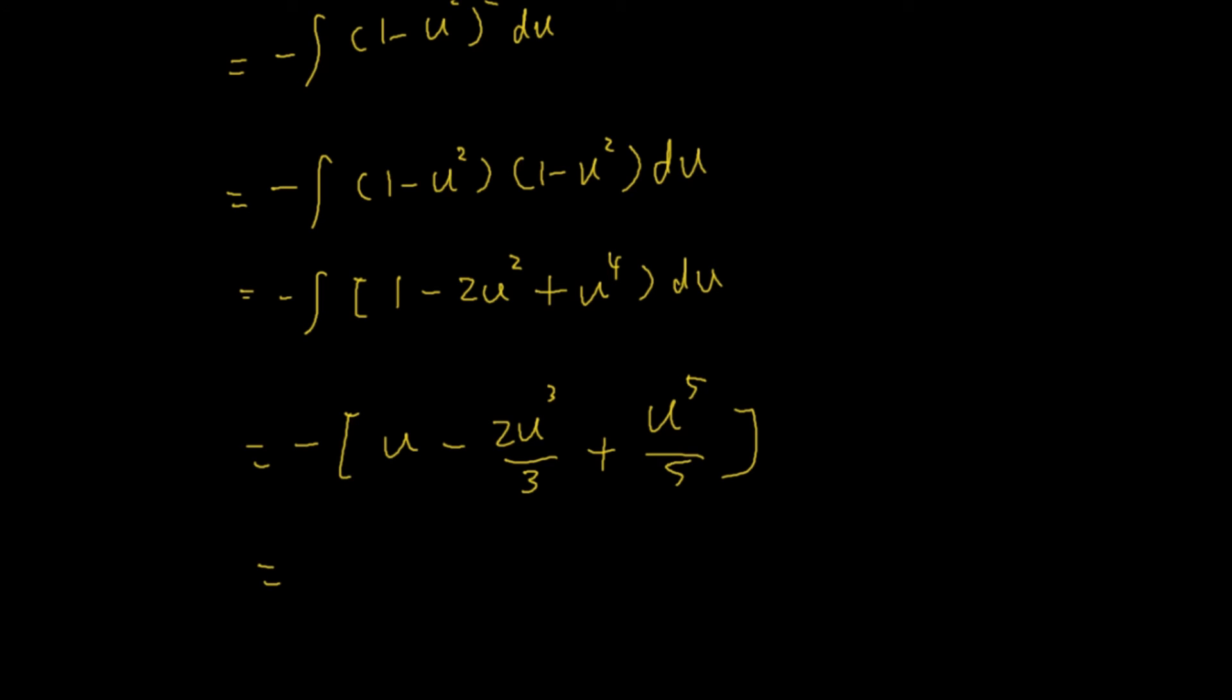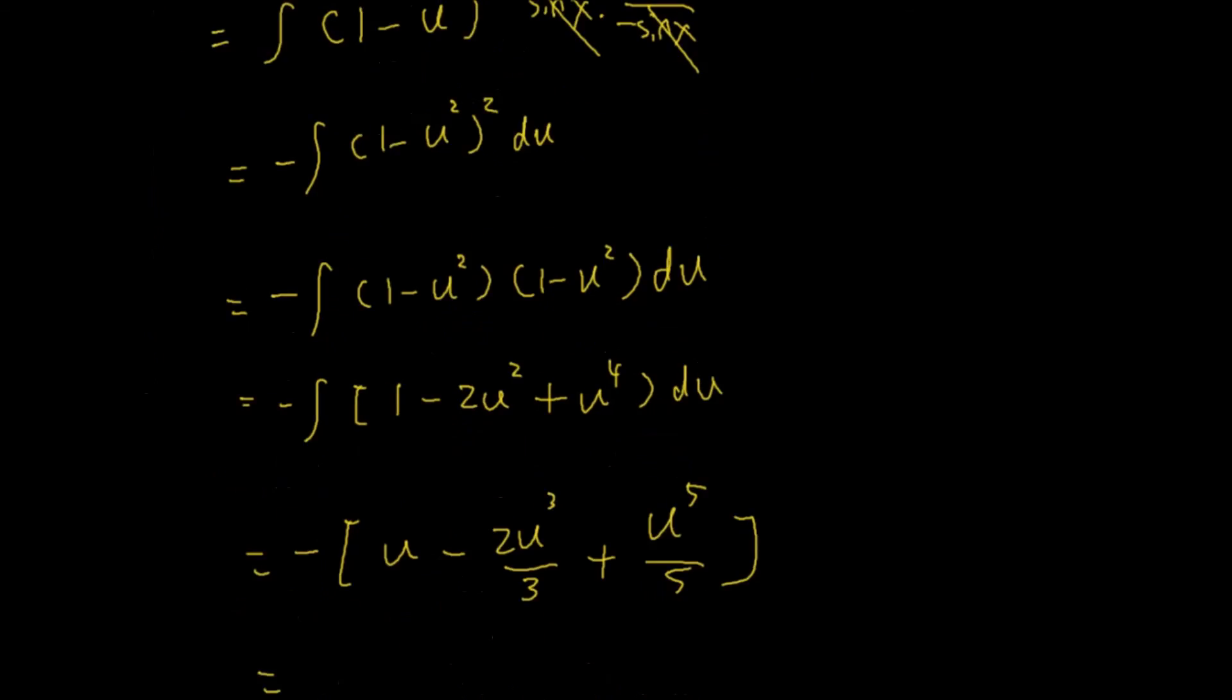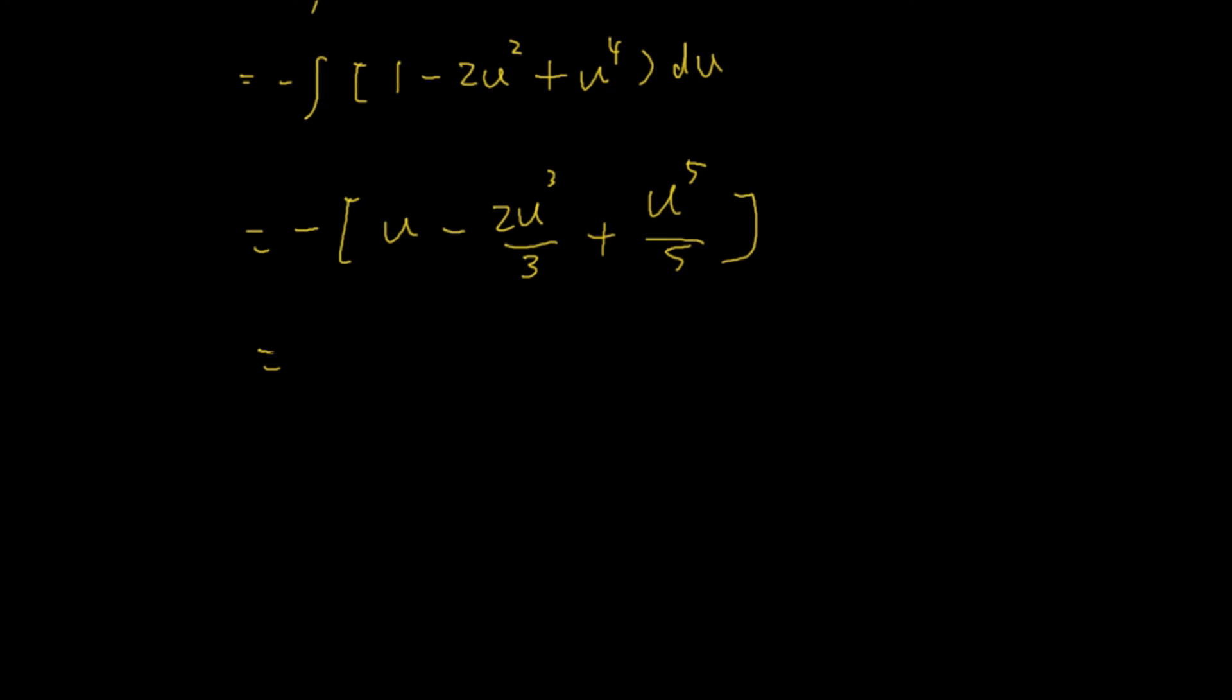And at the end we just need to replace what u is. So we know that u here is cosine of x, then we just have to replace everything here: negative cosine of x minus 2 cosine^3(x) over 3.